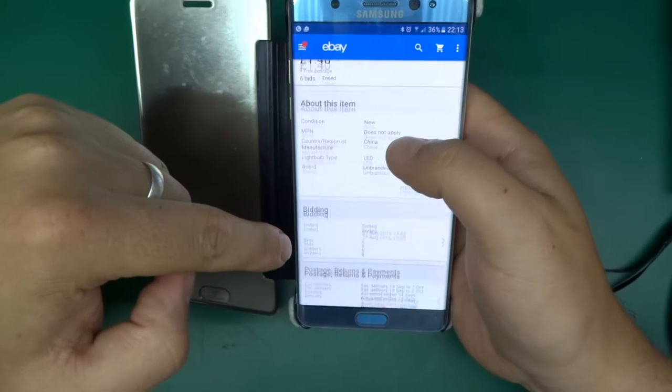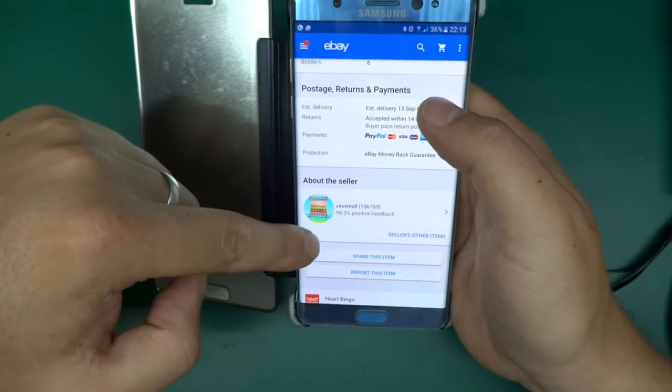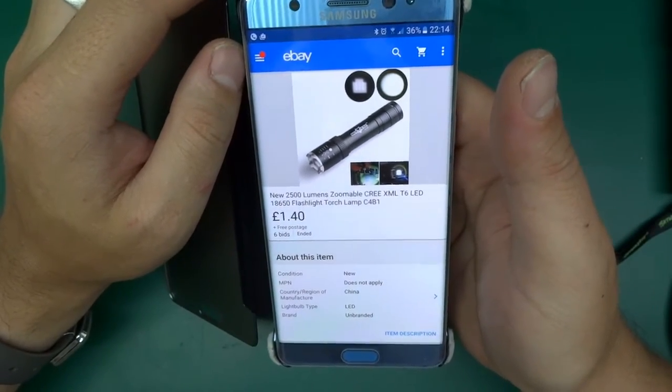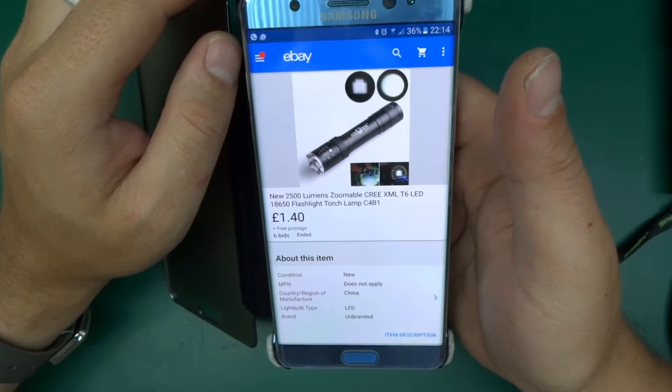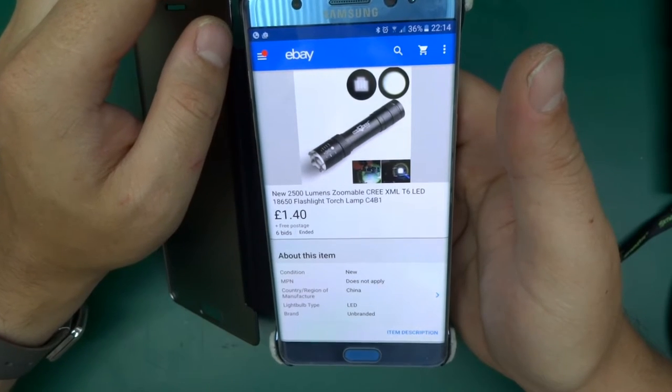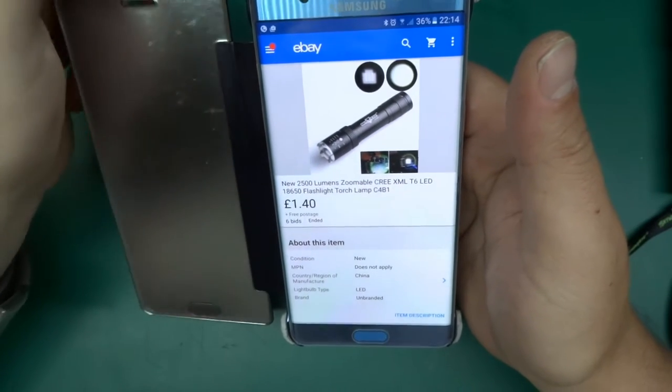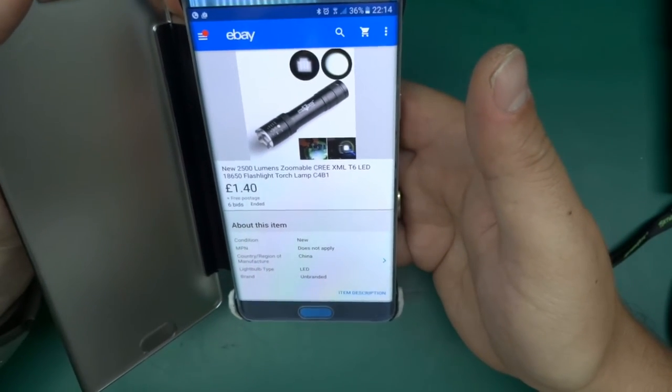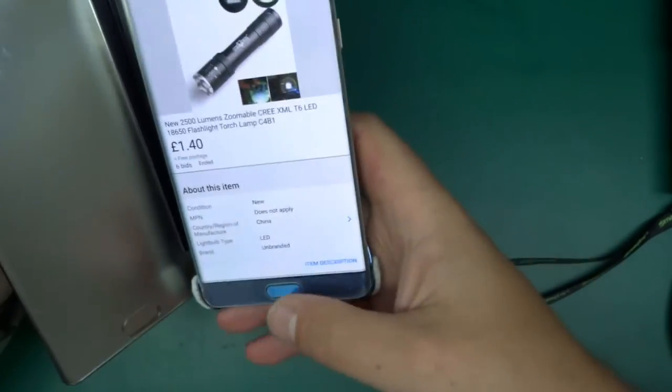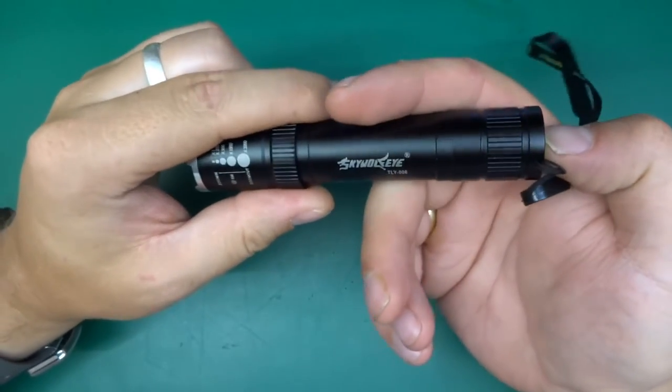It came reasonably quick from China from Sela zeusmole. The description says it's a new 2500 lumens zoomable Cree XML T6 LED 18650 flashlight. I'm wondering whether that's an actual Cree LED inside and whether it really puts out 2500 lumens.